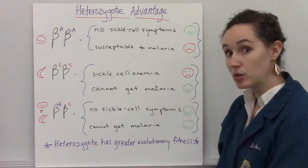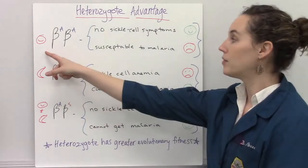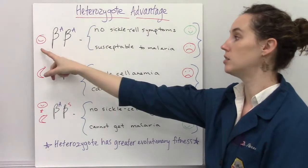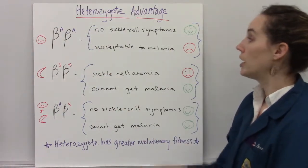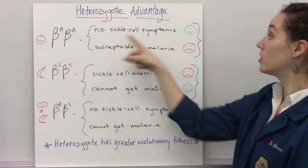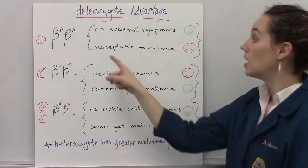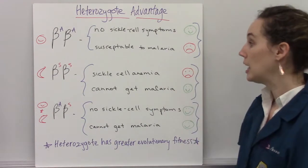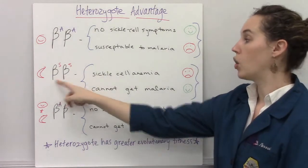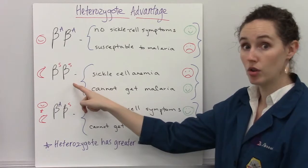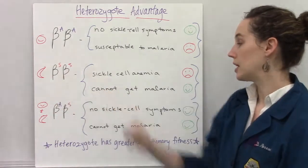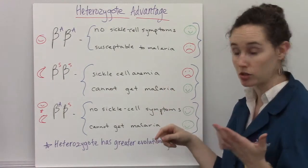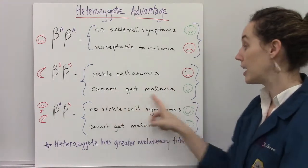Back to heterozygote advantage. If you are homozygous for normal shaped cells, the positive side is you're not going to have any sickle cell symptoms, but you are susceptible to malaria. If you are homozygous for the sickle hemoglobin, your cells look like a sickle — you do show those symptoms of sickle cell anemia, but you can't get malaria.